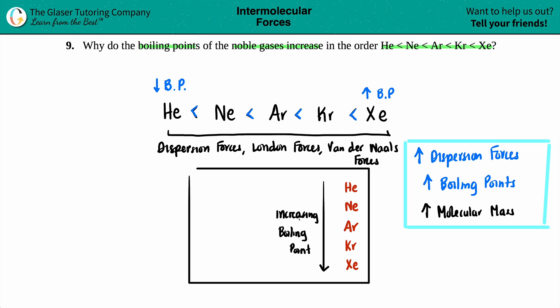So why do the boiling points of the noble gases increase in order of helium to neon to argon to krypton to xenon is because helium has the lowest molecular mass, which in turn has the lowest dispersion forces. On the flip side, xenon, it's got the highest boiling point, which accumulates into the highest molecular mass on the periodic table, which in turn is the highest dispersion force, the highest attraction.